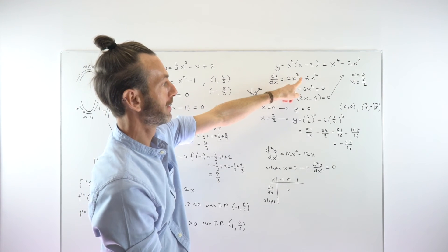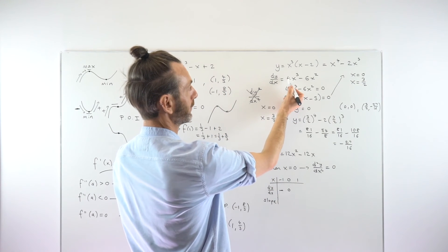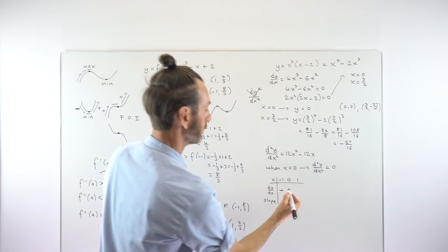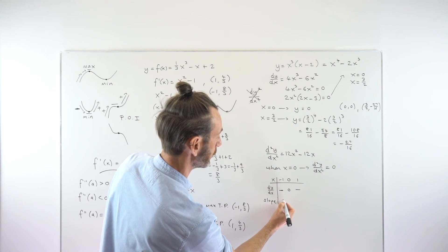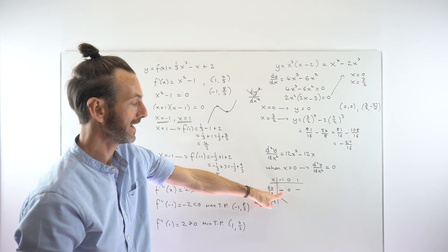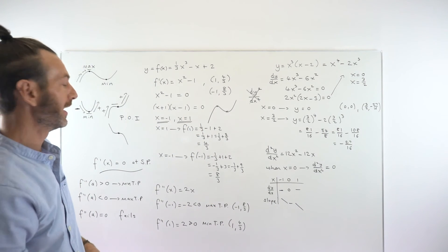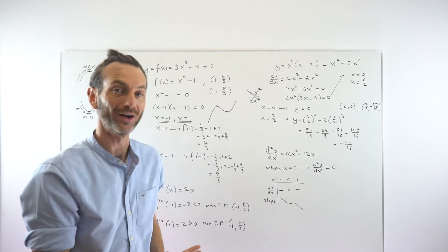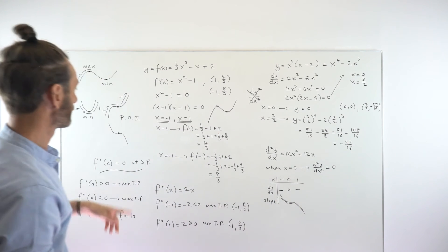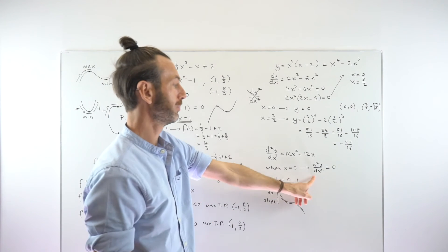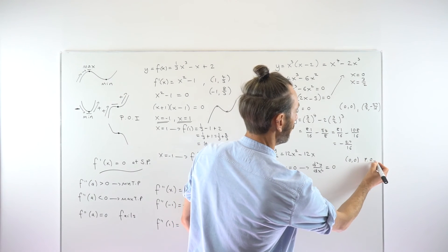Testing x = −1 in the first derivative 4x³ − 6x²: that gives a negative value. Testing x = 1 gives 4 − 6 = −2, also negative. So we have negative, zero, negative — the slope goes down, stops, then goes down again. That tells us it's a point of inflection. So at (0, 0) we have a point of inflection.